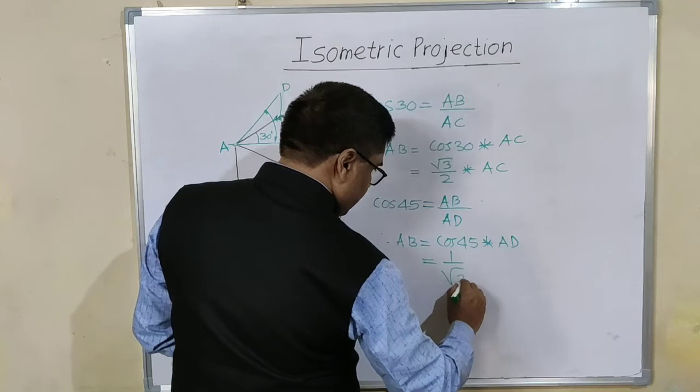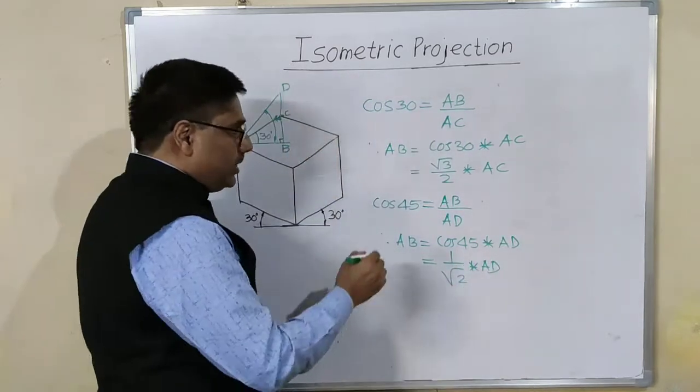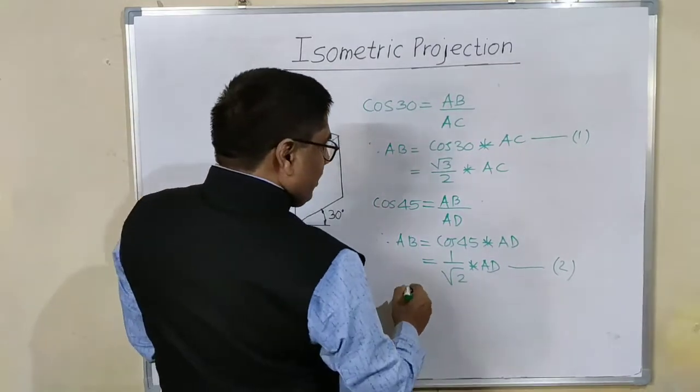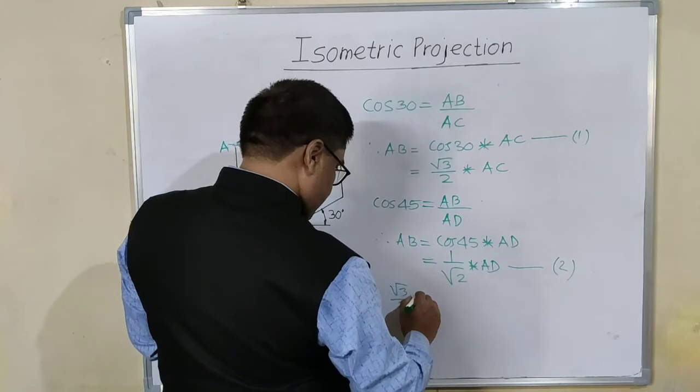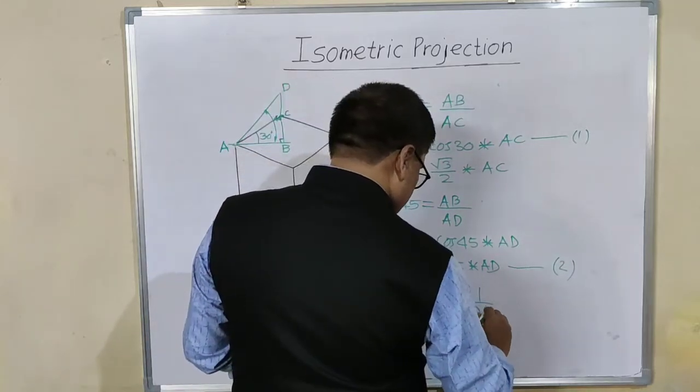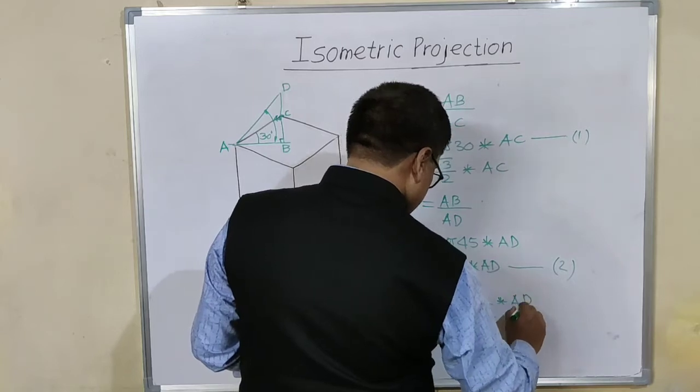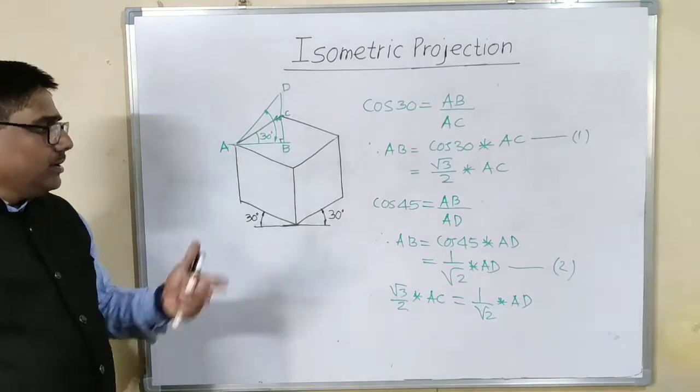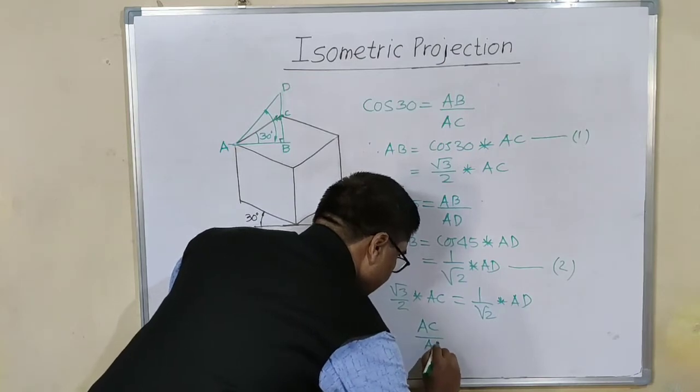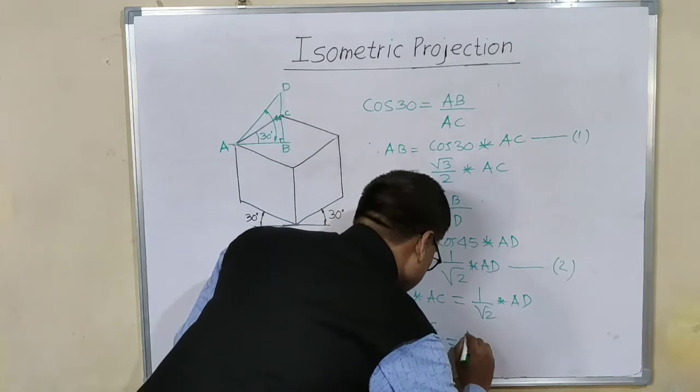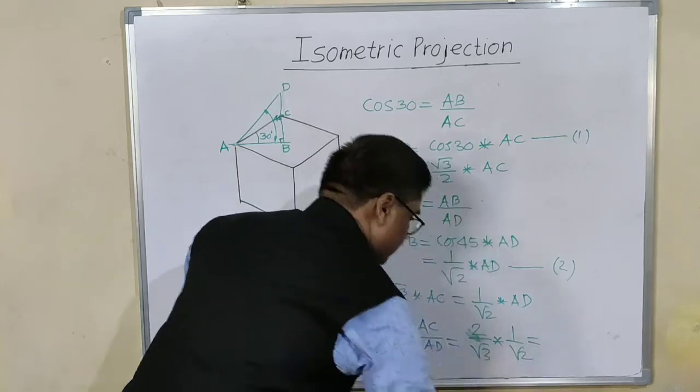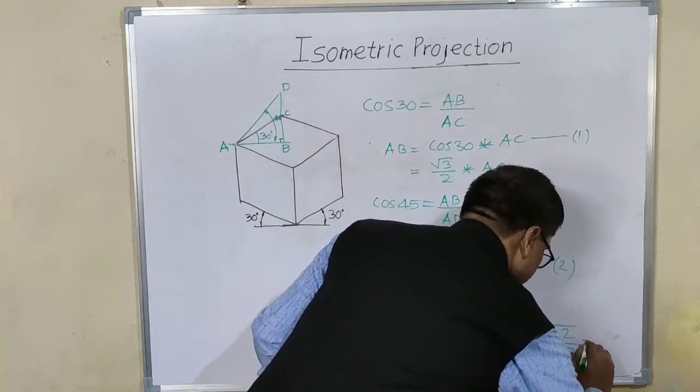Now equating this equation and this equation, we will get root 3 by 2 into AC is equal to 1 by root 2 into AD. Now we want to find this ratio AC by AD. Therefore AC by AD is equal to 2 by root 3 into 1 by root 2, which is equal to root 2 by root 3.